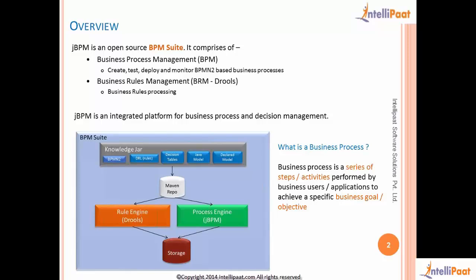These are the two main components in JBPM. Looking at the high-level diagram, we have the rule engine and the process engine — the two main engines that constitute this BPM suite. Both of them share the same Maven repository or knowledge base. The knowledge base includes all process diagrams drawn using BPMN2, the rules written, decision tables, Java models, fact types, and domain models on which the process works and rules are applied. Everything is packaged into a JAR file and deployed in the Maven repository.